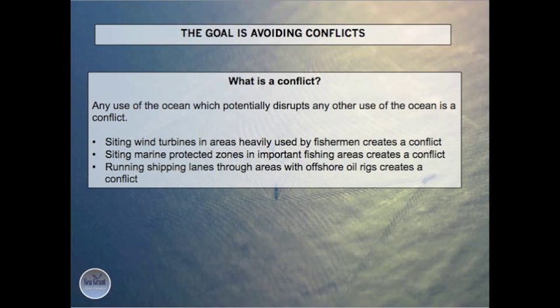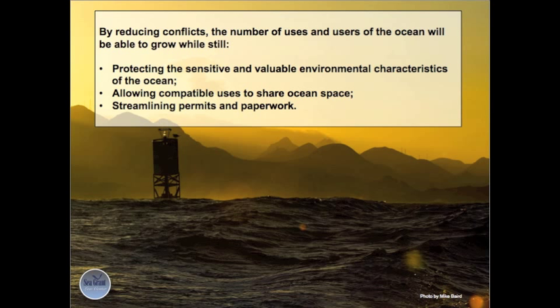The goal is avoiding conflicts. Any use of the ocean which potentially disrupts any other use of the ocean is a conflict. For example, siting wind turbines in areas heavily used by fishermen creates a conflict. Siting marine protected zones in important fishing areas creates a conflict. And running shipping lanes through areas with offshore oil rigs creates a conflict. By reducing conflicts, the number of uses and users of the ocean will be able to grow while still protecting the sensitive and valuable environmental characteristics of the ocean, allowing compatible uses to share ocean space, and streamlining permits and paperwork.